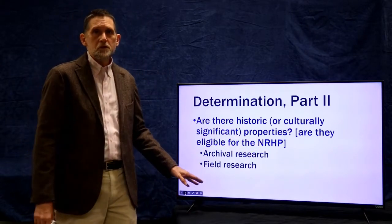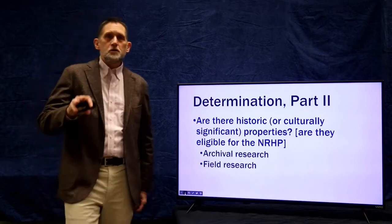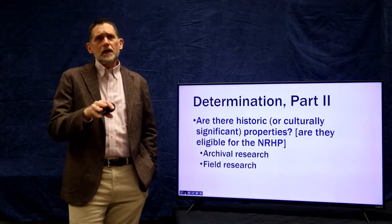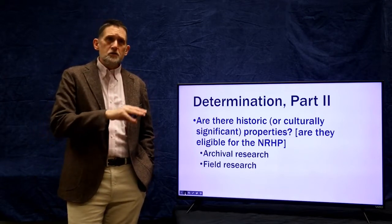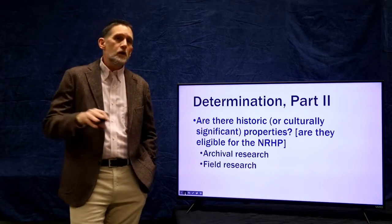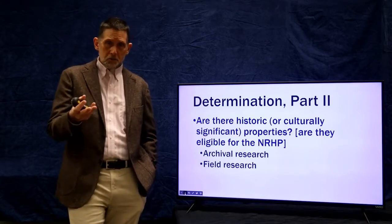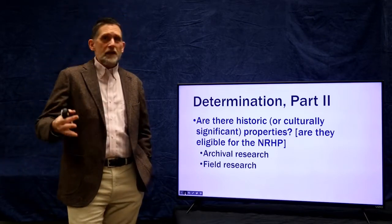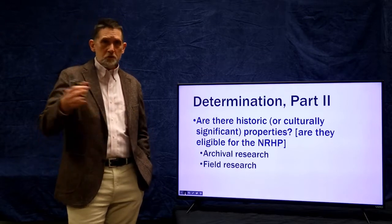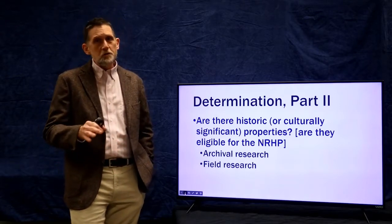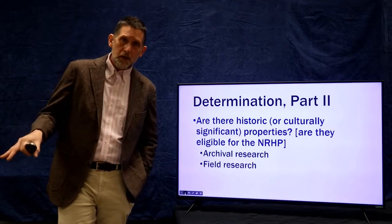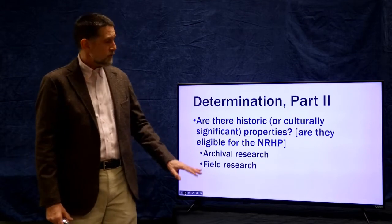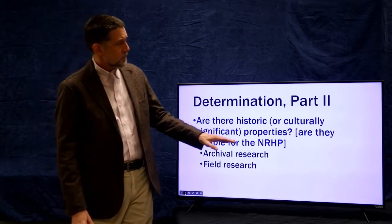The other thing we might do is field research — go out to those buildings and actively look at them, survey them. We might even, if we're doing archaeology, do archaeological research to determine whether there are any sites there. In archaeological research we call it CRM, Cultural Resource Management. We call that Phase 1 — just doing surveys, seeing if there's anything there. And we might do some Phase 2 excavations, which are test excavations. These are things we might do to see if there are eligible properties.